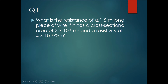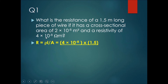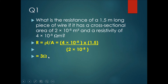Let's try a question. What is the resistance of a 1.5-meter long piece of wire with a cross-sectional area of 2 × 10⁻⁸ m² and a resistivity of 4 × 10⁻⁸ ohm meters? Using R = ρL/A: R = (4 × 10⁻⁸ × 1.5) / (2 × 10⁻⁸). After calculating, the final resistance is 3 ohms.